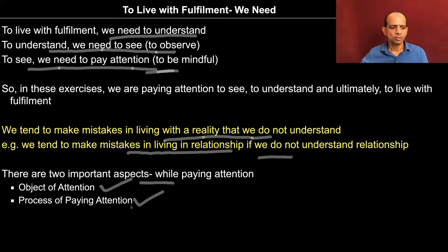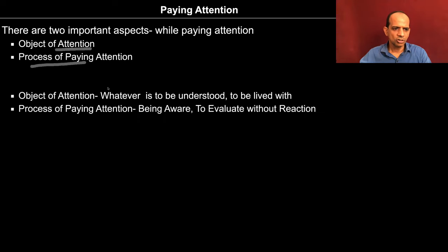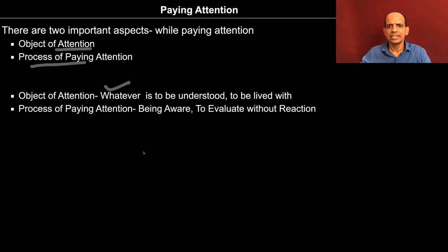There are two important aspects while paying attention: the object of attention and the process of paying attention. In exercise one, the object is the self — consciousness. In exercise two, the object is the body — material. So the object of attention is consciousness as well as material. I need to understand myself, I need to understand other human beings, I need to understand the rest of nature. So in exercise one we are trying to understand consciousness, and in exercise two we are trying to understand material.